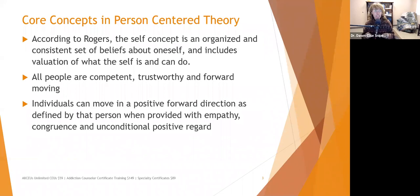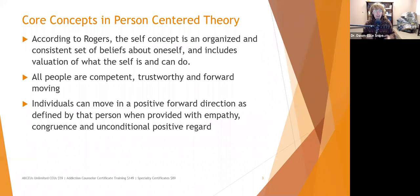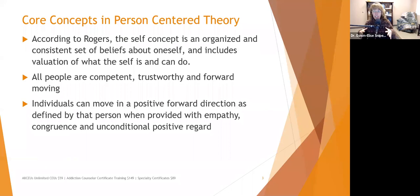Each person experiences life differently. Even identical twins living in the same household will have different perceptions, different friends, and different opinions. Children growing up in the same household can have very different behaviors and personalities. A lot of that is based on innate temperament and how that temperament interacts with their microsystem and mesosystem, as in Bronfenbrenner's ecological theory.